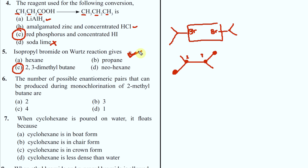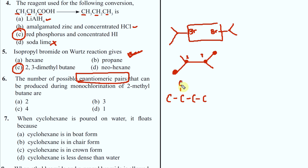It is an important question. The number of possible enantiomeric pairs - some of you who joined late might have a problem with this. Enantiomeric pairs means we covered this in optical isomerism lecture. For this test, ignore those questions as well. The number of possible enantiomeric pairs that can be produced by monochlorination of 2-methylbutane - let us first draw 2-methylbutane. Now we are going to do monochlorination. There are multiple positions. Now let us label them A, B, C, D.